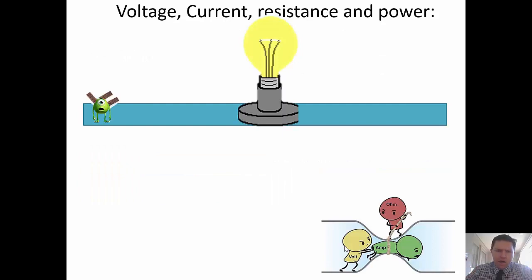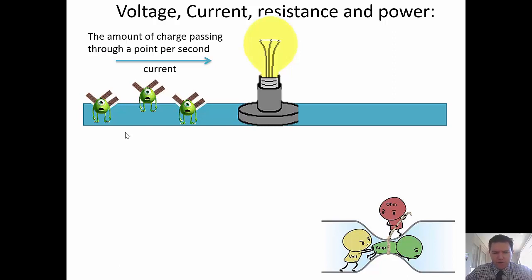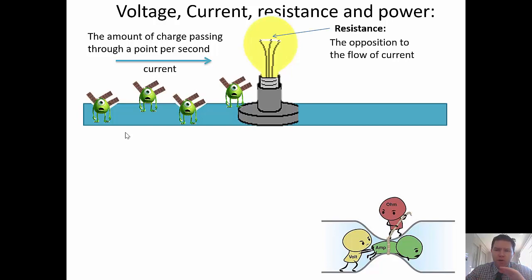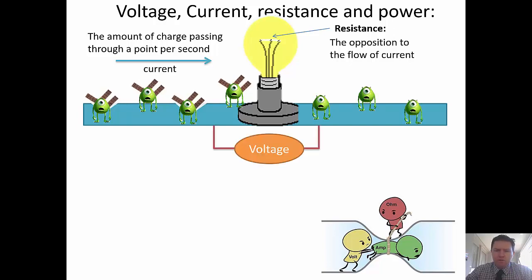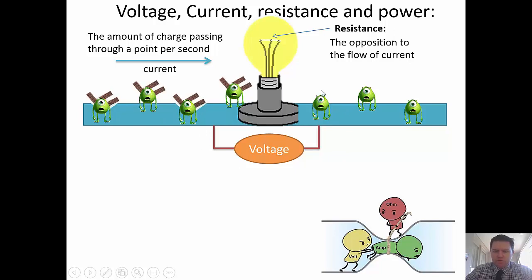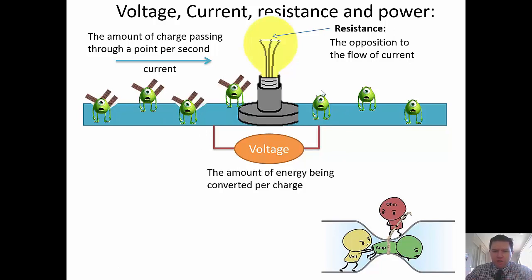Mike Wazowski has his three chocolate bars — that's three joules of energy per coulomb, so three volts. He's travelling through a wire; the amount of charge passing a point per second is current. He gets to a light bulb, which is a resistor — it has resistance that opposes the flow. An ammeter measures current in series, placed in the circuit to count the charge particles. Voltage is measured across something — three volts on one side, zero on the other — a difference of three volts.